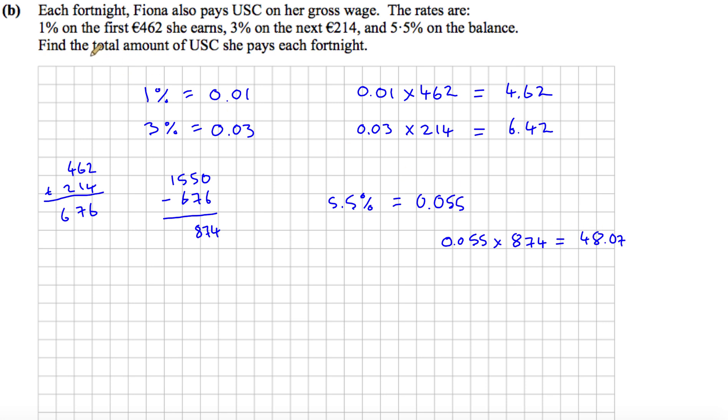So the total amount of USC would be these three numbers added together. So when we add those together, we get €59.11. So that's how much USC she pays each fortnight.